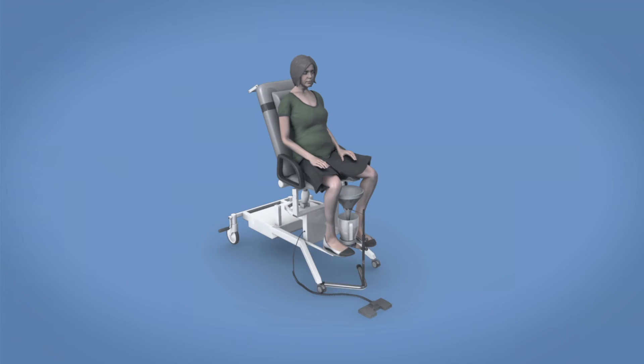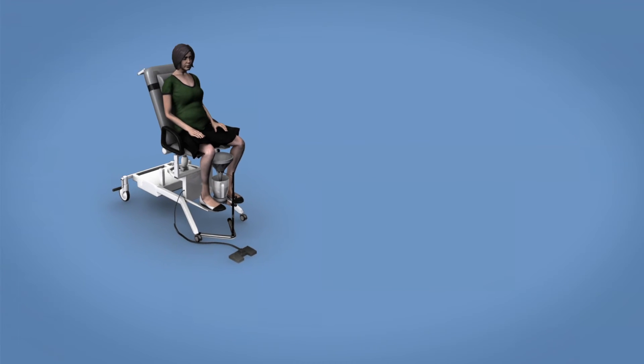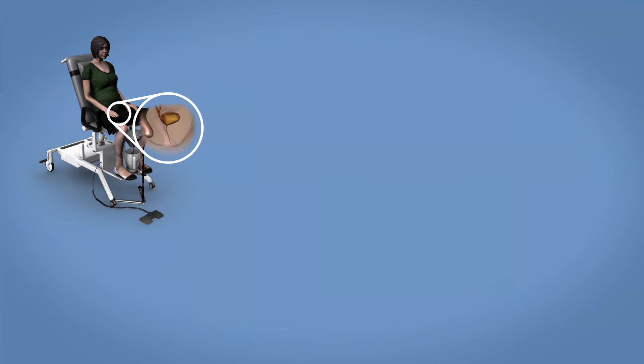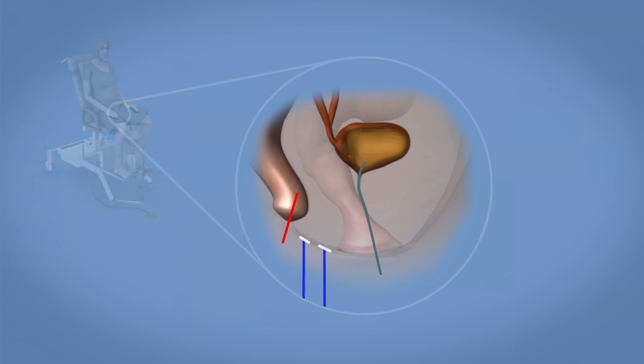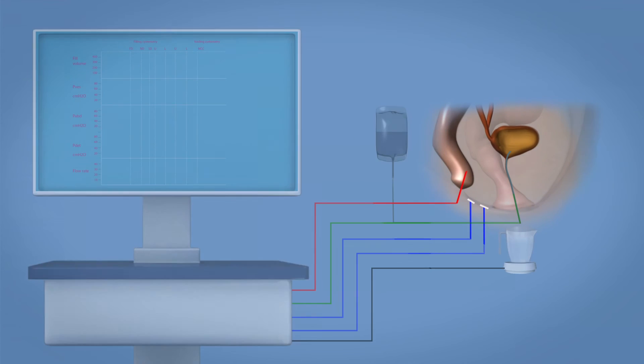If you have to undergo cystometry as well, a catheter will be inserted into your urethra after receiving a local anaesthetic. Then one more catheter is placed in your rectum. Both catheters measure the pressure in your bladder and your abdomen. Sensors on your abdomen monitor the activity of the pelvic muscles.